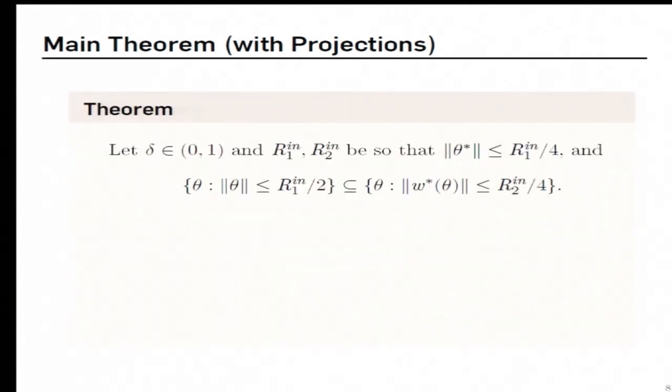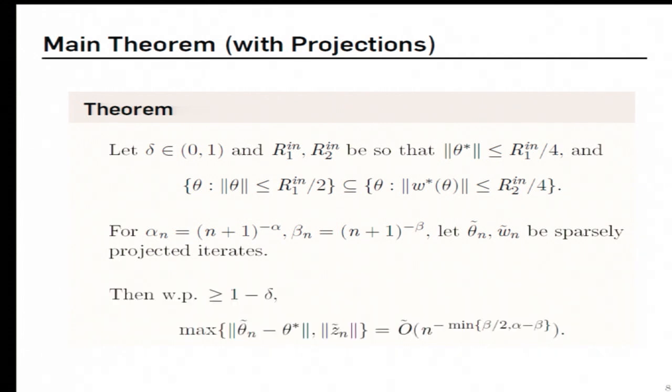Now using the sparse projection, we have a result that gives us an explicit convergence rate. So the result is as follows. Fix some delta which is between 0 and 1 and choose R1 and R2 sufficiently large so that such conditions hold. Okay, so one can ensure by choosing this R1 and R2 sufficiently large. Then for the step size sequence alpha n equals 1 over N to the power alpha and beta n equals 1 over N plus 1 to the power beta. If we have the sparsely projected iterates, then they converge with this rate with probability 1 minus delta.